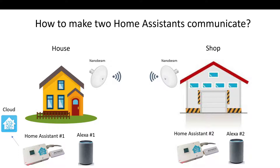I have one Home Assistant in the house and also an Alexa, and another Home Assistant in the shop with an Alexa there too. What I wanted to do is turn on and off the lights in the shop from the house, and vice versa, and be able to tell Alexa what to do. I wanted to do this without paying for two cloud accounts — I was happy to pay Nabu Casa for one, but not two.